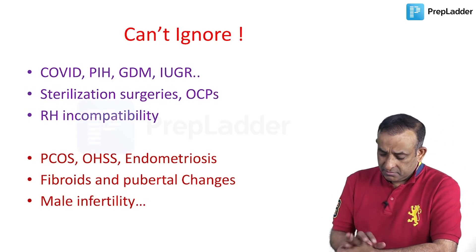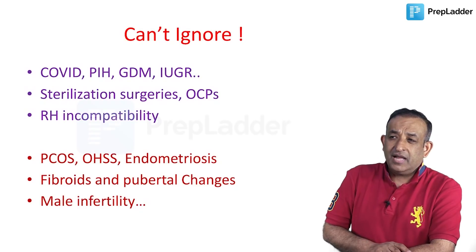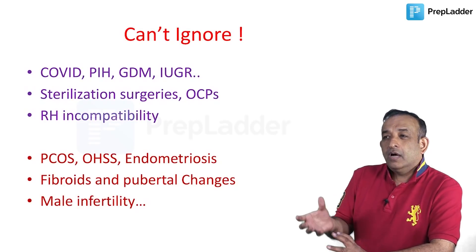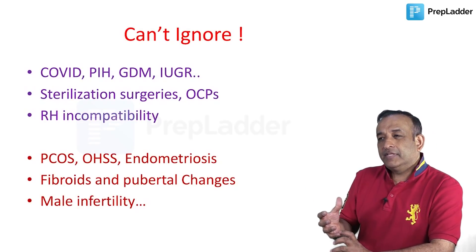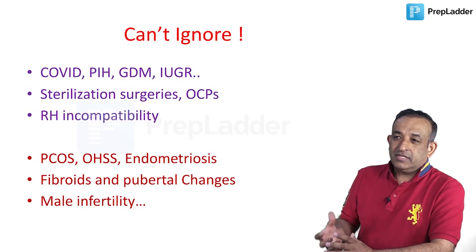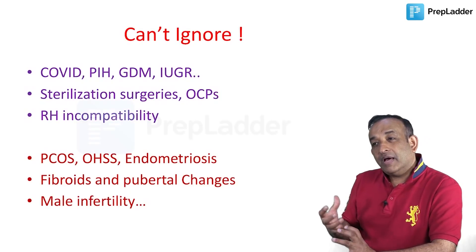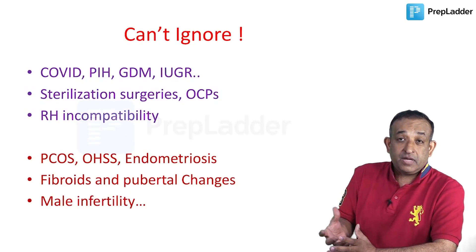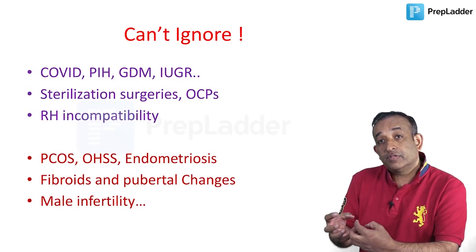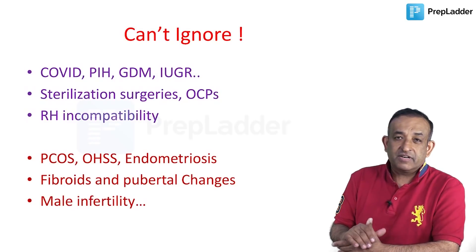Something coming up in infertility is male infertility topics — more than general or female infertility topics, which have been covered extensively. Now they are asking about semen analysis in new ways: assessing male fertility, whether it is pre-testicular or testicular failure. We have discussed whether we can manage obstructive azoospermia by testicular aspiration, what we can do with aspirated sperms, and what procedures can be performed — so male infertility has found more mention these days.